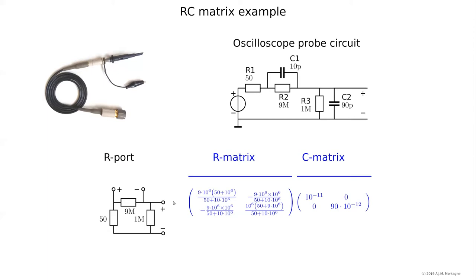What is the resistance that you would measure at port two? It is one megaohm in parallel with nine megaohm in series with 50 ohm. That is exactly what you see in position two-two.